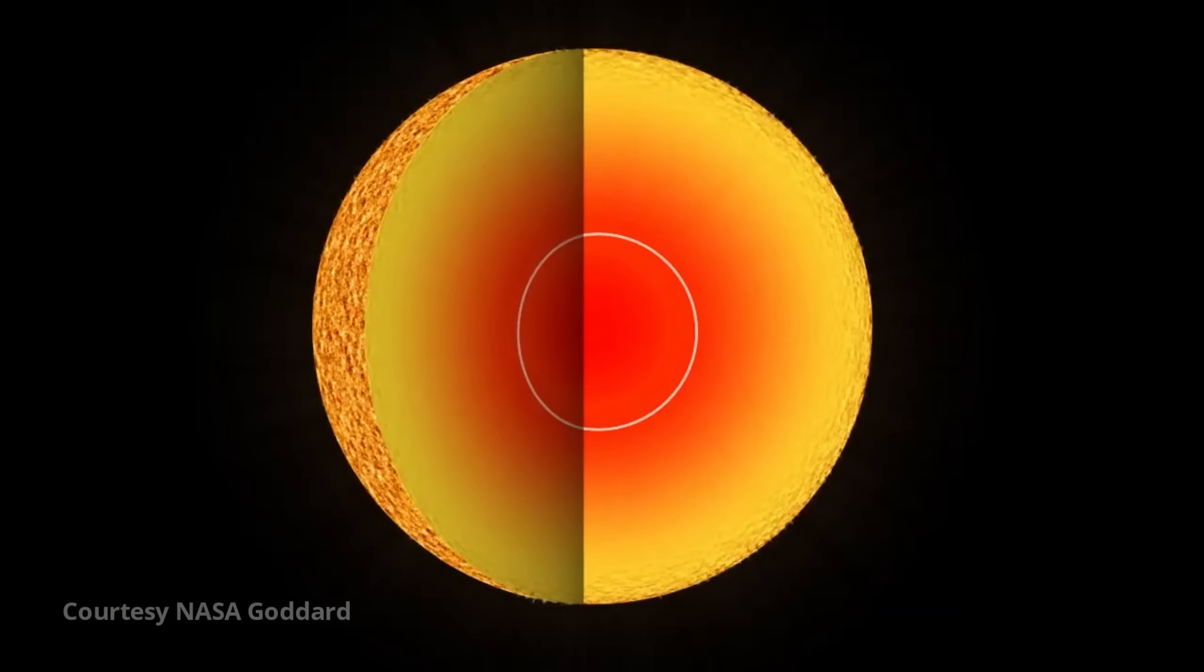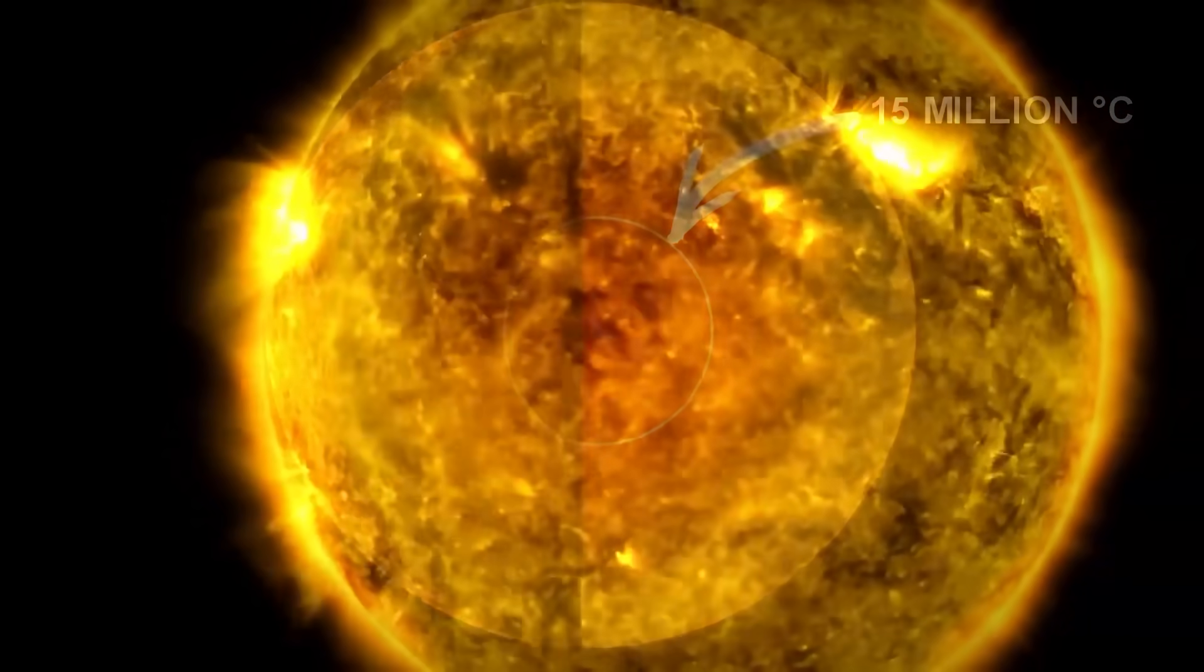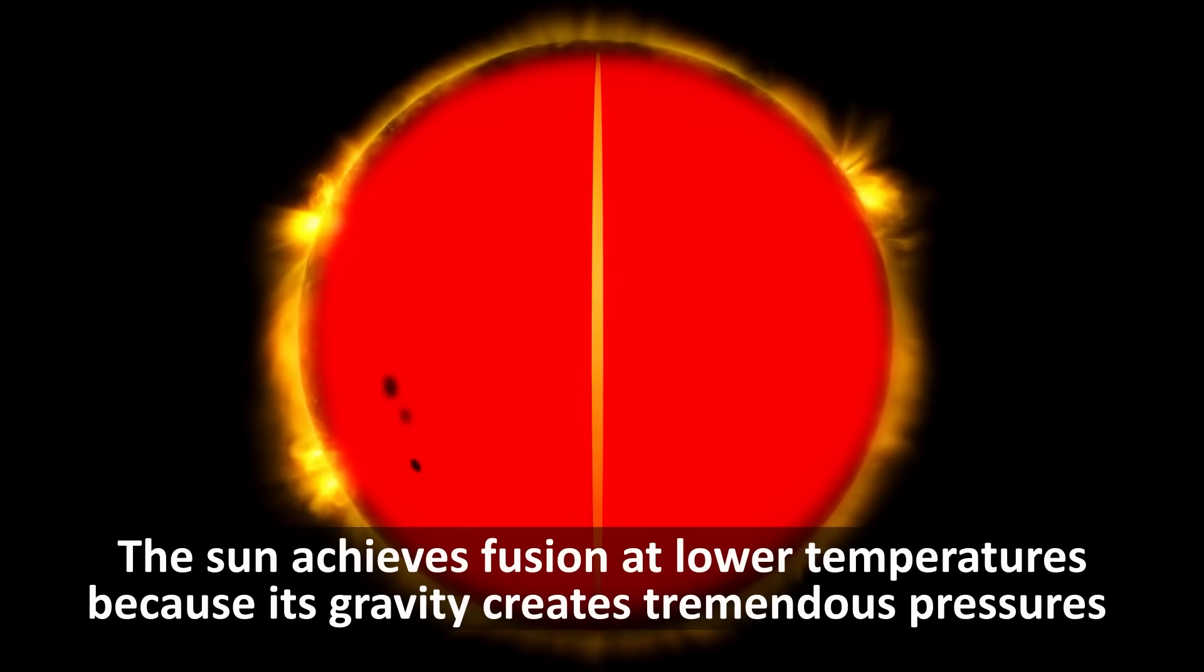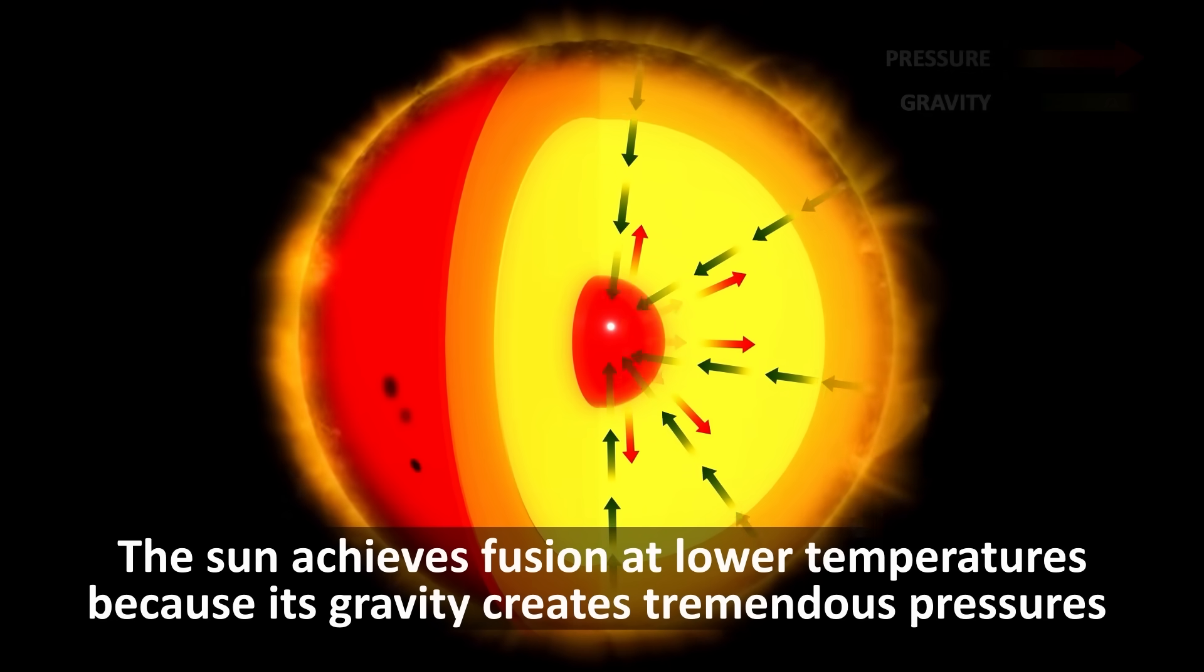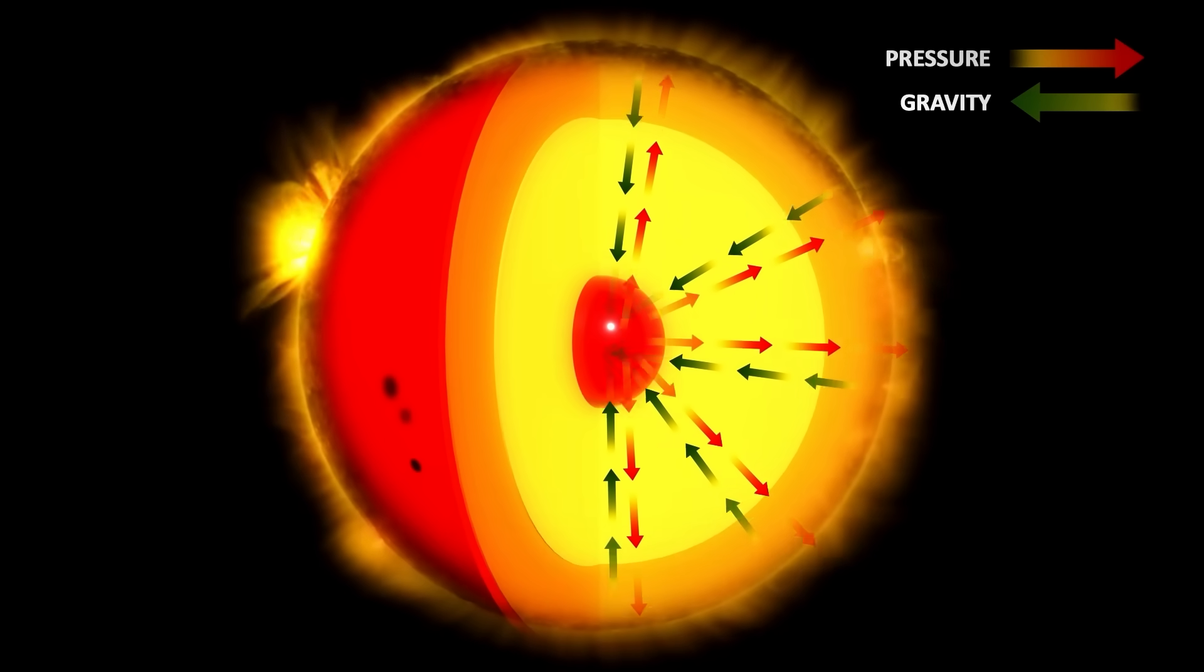The sun is powered by hydrogen fusion, but its mechanism is quite different than that of a hydrogen bomb. It does not need nearly as high a temperature because its mass creates tremendous pressure in its core, pushing hydrogen nuclei together. The sun has such a huge amount of hydrogen atoms that the low probability of fusion still amounts to a very high number of nuclei fusing together.